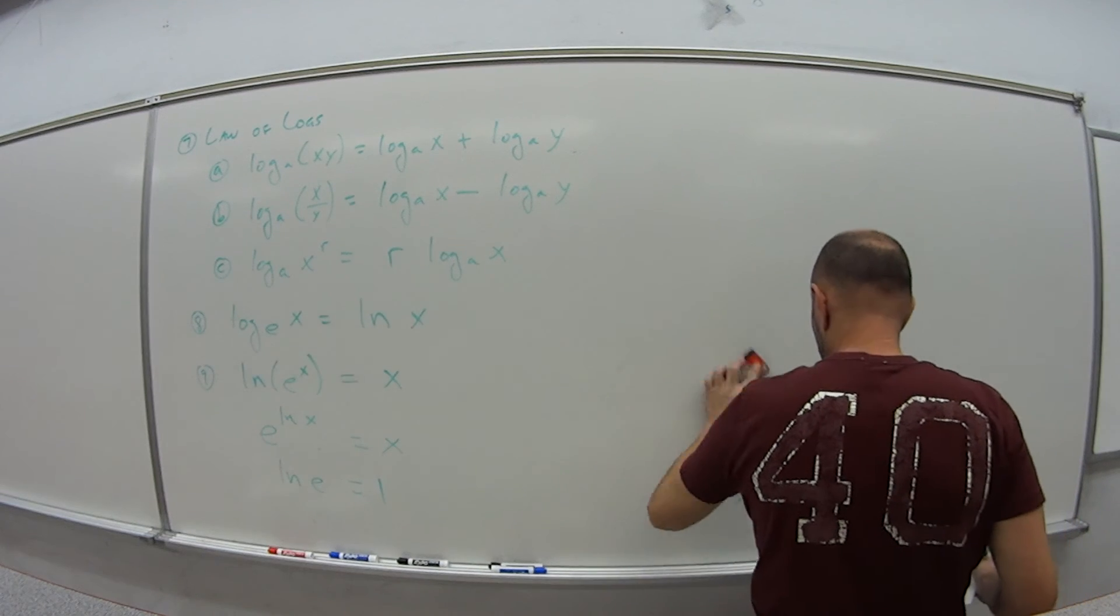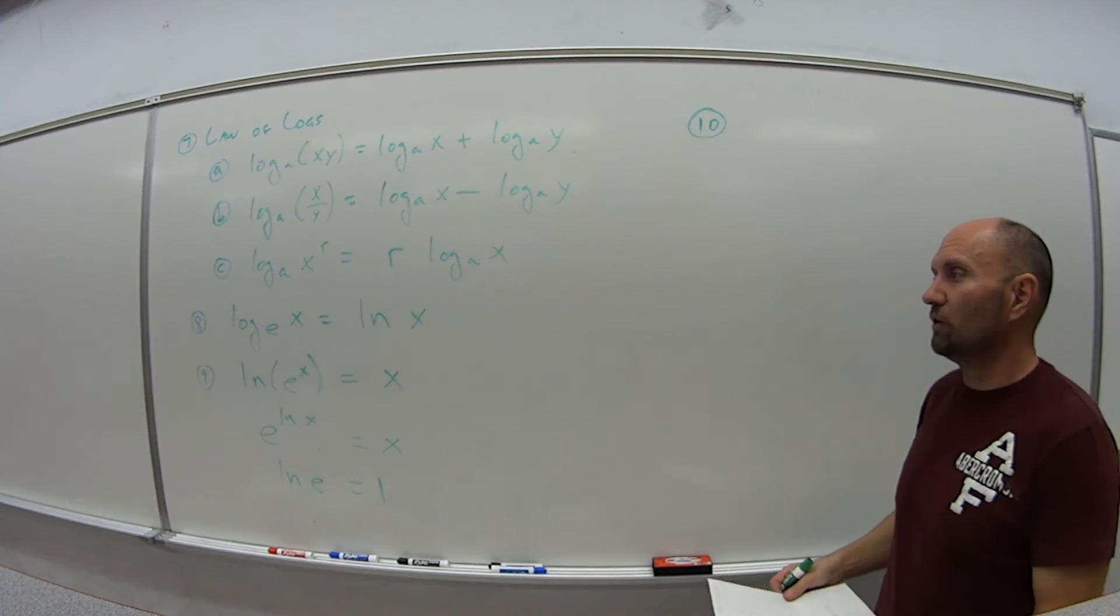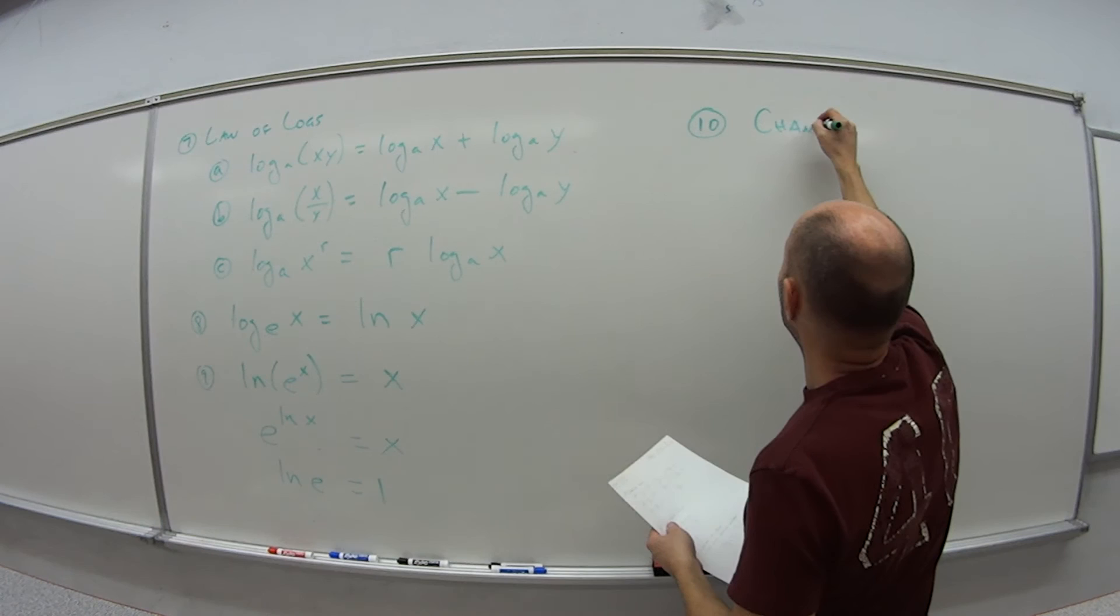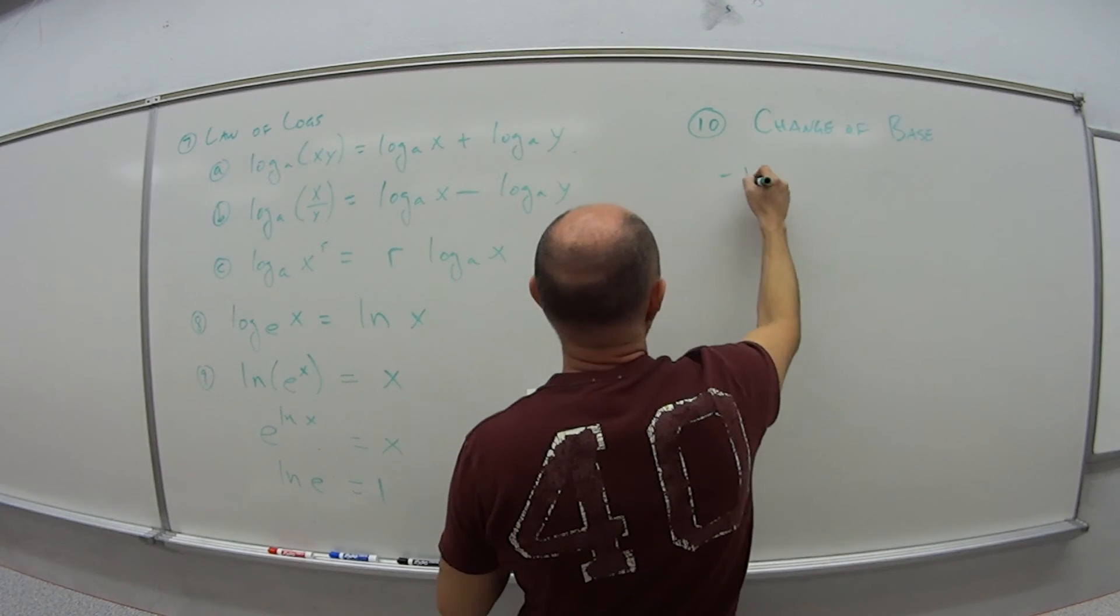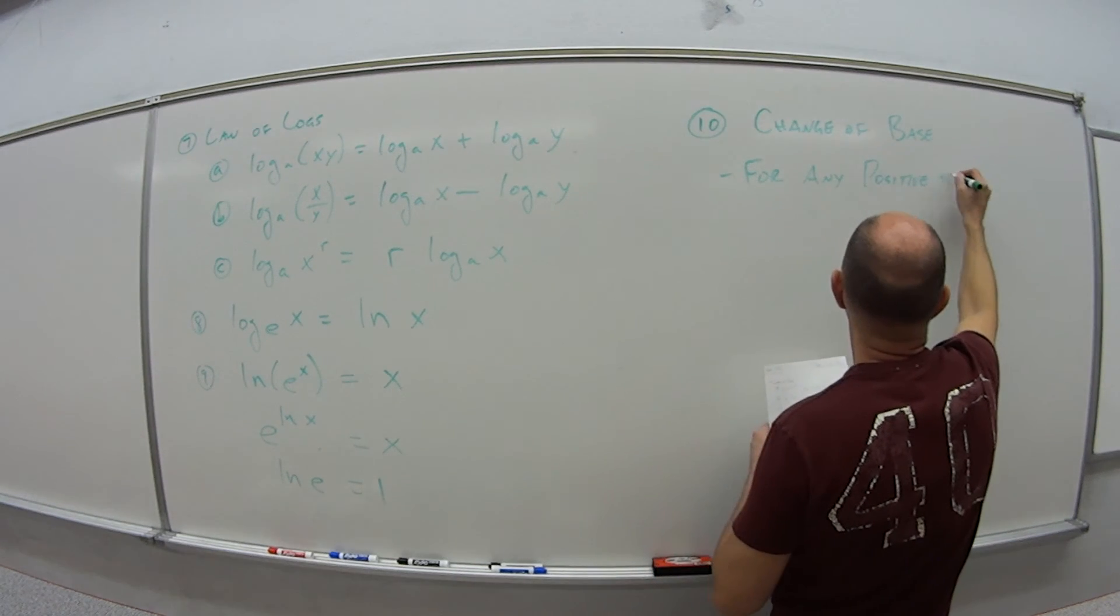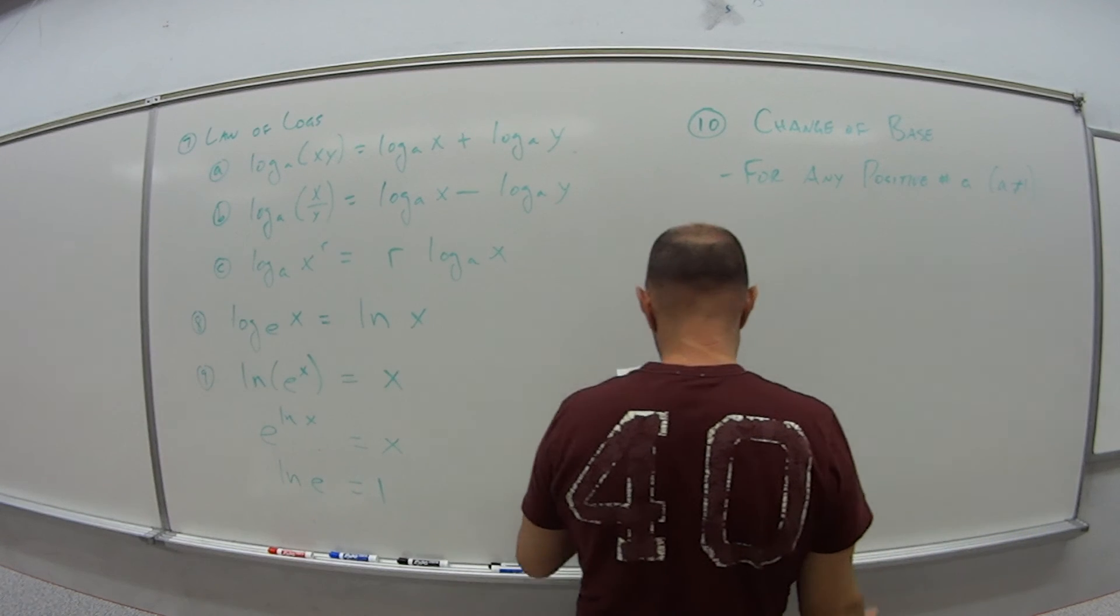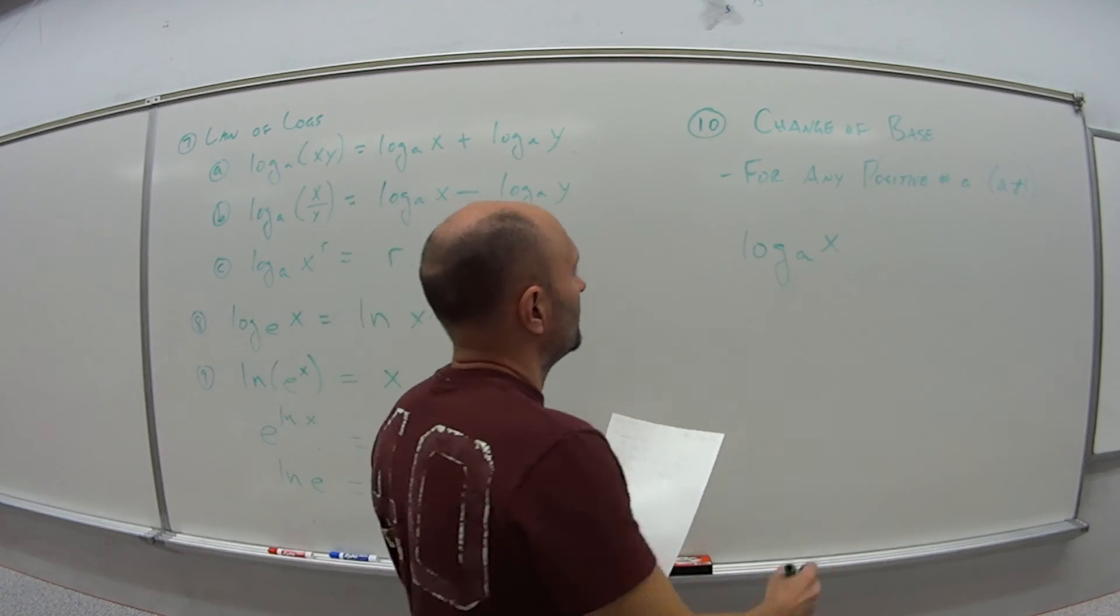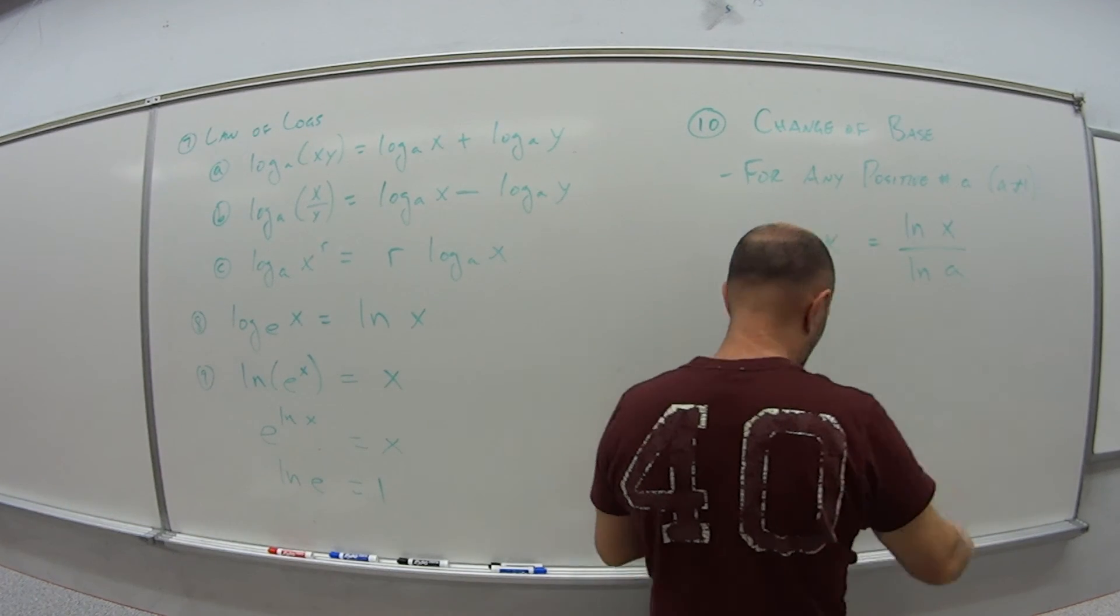And then number 10, this isn't covered too much. So if this one is maybe a little bit new to you or you really have to go back and think about it, I wouldn't be surprised. But it's our change of base rule. And this says that for any positive number A, except for 1, so A is not 1, but any positive number A, log base A of X is equal to the natural log of X over the natural log of A.